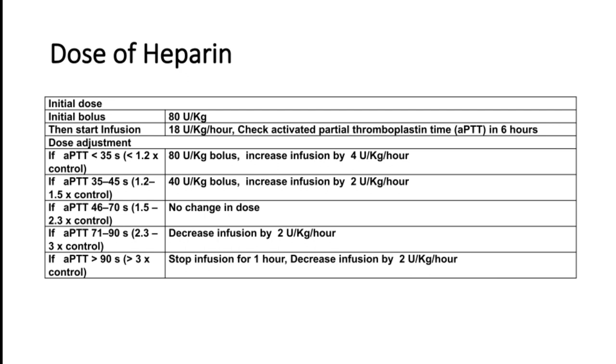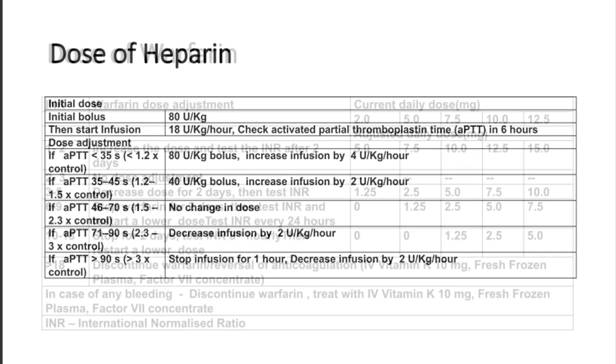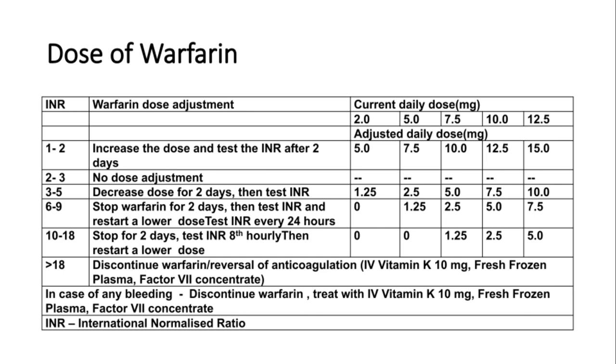When starting heparin, titrate the dose according to aPTT — a chart is provided to guide heparin titration for thrombotic episodes, including APS. For warfarin, another chart is provided to control the dose according to PT-INR. In summary, APS is a condition that can produce both arterial and venous thrombosis. It can be primary without any cause, or secondary to an immunological disease — classically SLE.